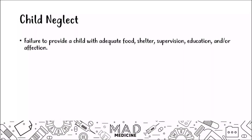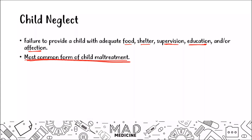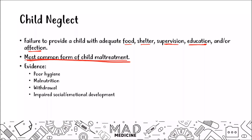Child neglect occurs when a parent or caregiver fails to provide the child with adequate food, shelter, supervision, education, or affection. Affection is a very important part of a child feeling comfortable. Child neglect is the most common form of child maltreatment — it is often overlooked and people don't realize they're doing it. Evidence includes poor hygiene, malnutrition, withdrawal symptoms, impaired social and emotional development, and failure to thrive.